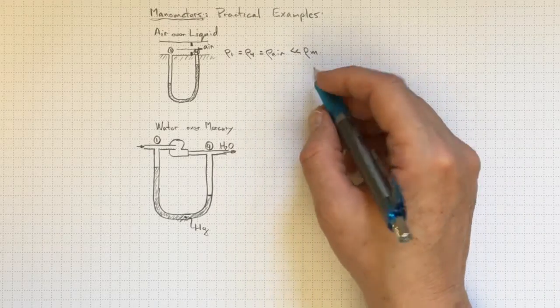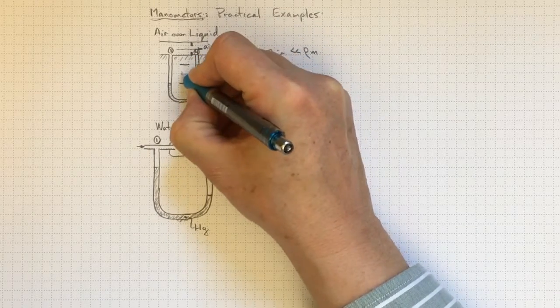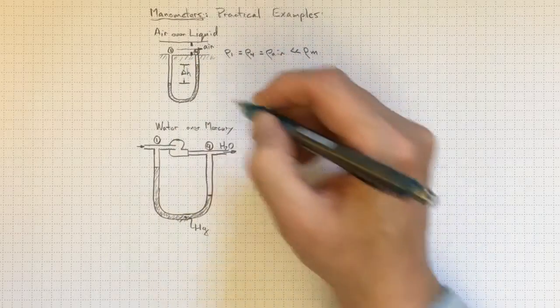The only thing that's going to have an effect on the pressure difference is the height that we measure here. So that delta H and the density of the manometer fluid will tell us what the pressure difference is.